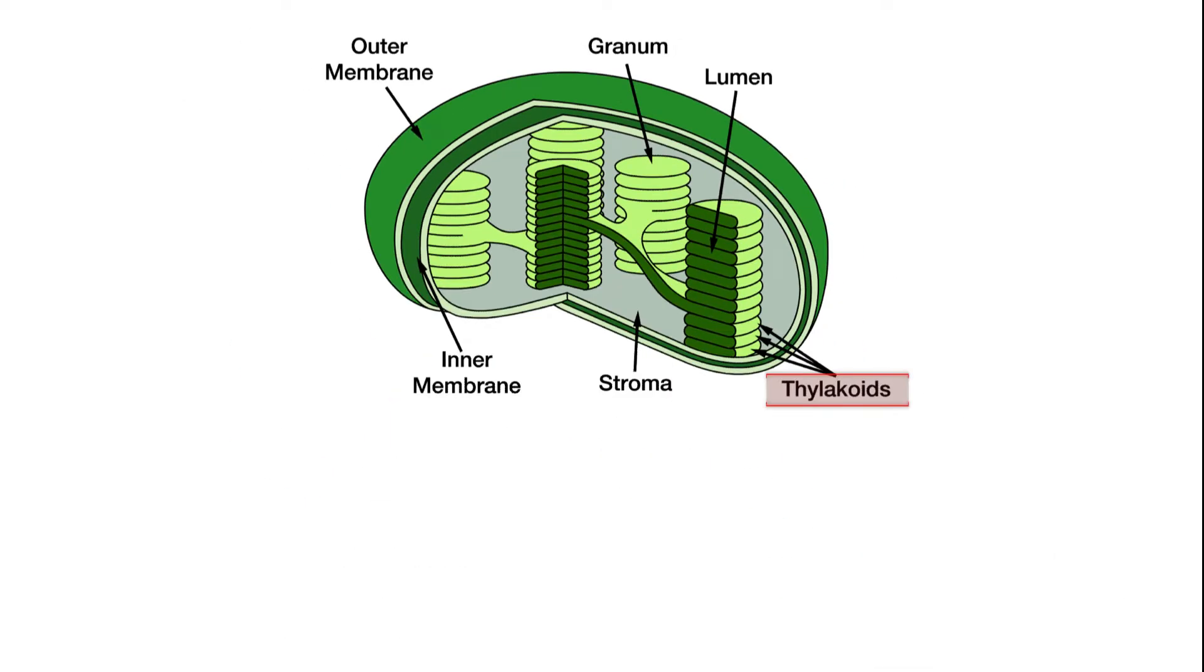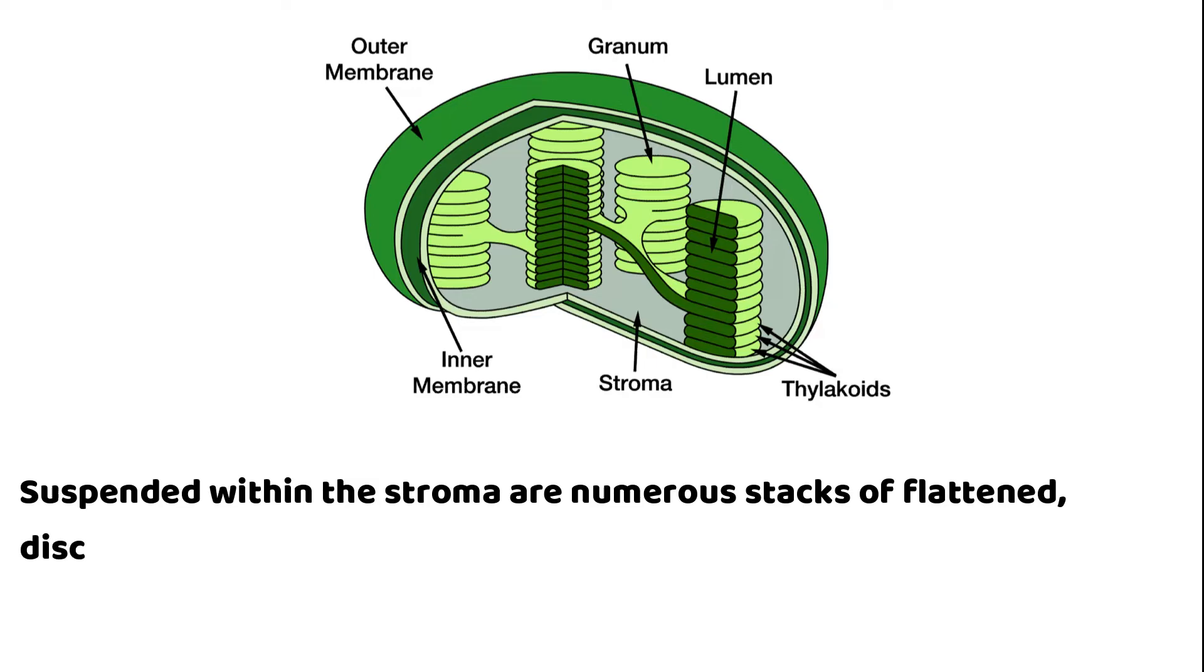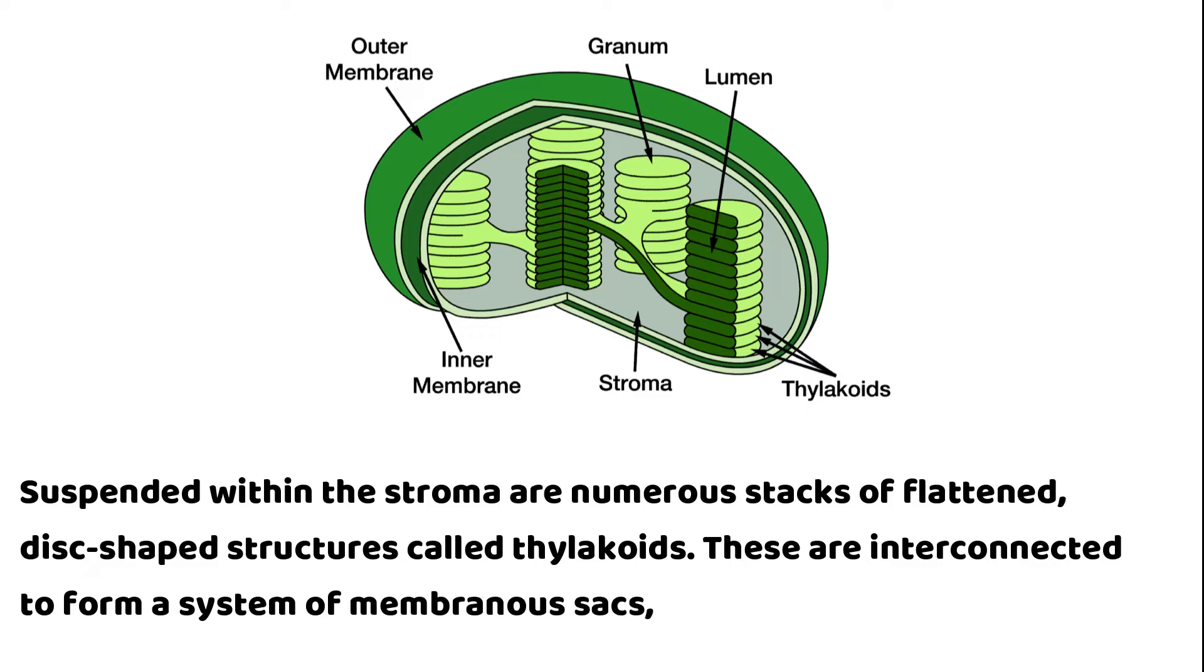Thylakoid: Suspended within the stroma are numerous stacks of flattened, disc-shaped structures called thylakoids. These are interconnected to form a system of membranous sacs, resembling a stack of pancakes.